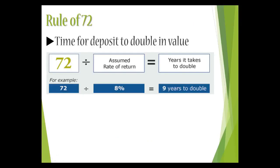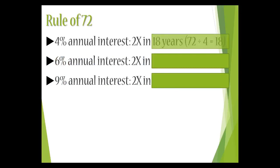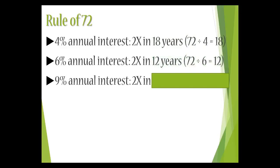The other aspect of returns we want to look at is the rule of 72 — how long would it take for a deposit to double in value? The formula is simple: 72 divided by the assumed annual rate of return tells you how many years it takes to double. So at an 8% rate of return, it would take nine years for your initial deposit to double. At 4% annual interest, your deposit would double in 18 years; at 6%, it doubles in 12 years; and at 9%, it doubles in just 8 years. The higher the rate of return, the significantly faster your deposit will double in value.